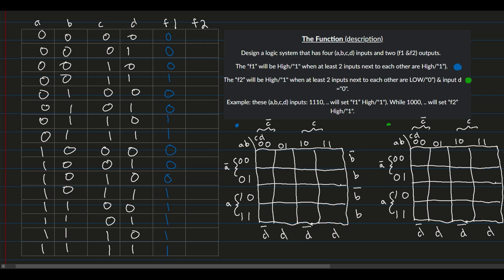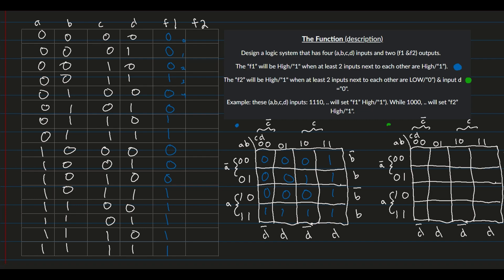We can now graph F1 on the kmap. Looking at the indexes, index 0 is 0, index 1 is 0, index 2 is 0, index 3 is 1. Then we have two 0s, then two 1s — this makes sense because that 1 would be next to the other 1 since it's B and C. Then three 0s, and then the rest are 1s.